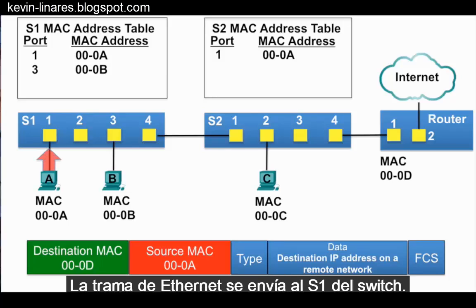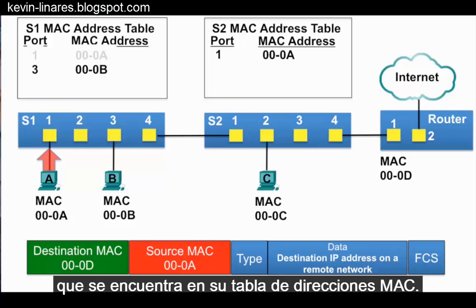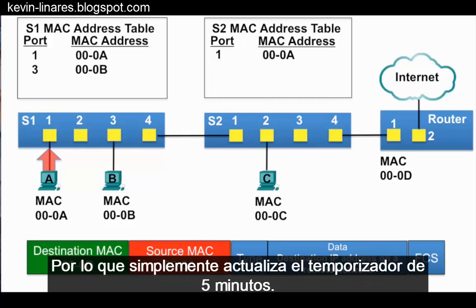The Ethernet frame is sent to switch S1. Switch S1 receives the frame and examines the source MAC address, which is already in its MAC address table, so it simply refreshes the 5-minute timer.